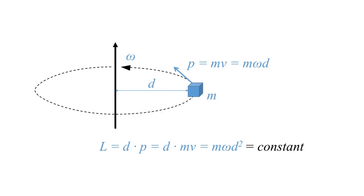Let's start with this sketch and assume that the blue box represents mass on, inside or above the Earth's surface. If mass inside the Earth is relocated or shifted on the surface, this will cause the rotation of our planet to change slightly. This can be explained by conservation of angular momentum.